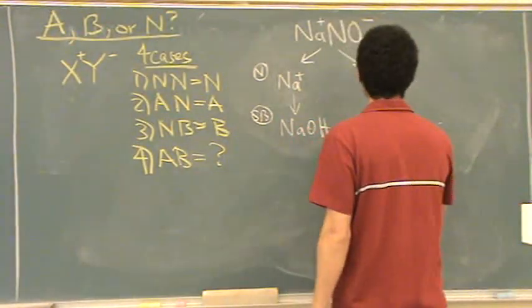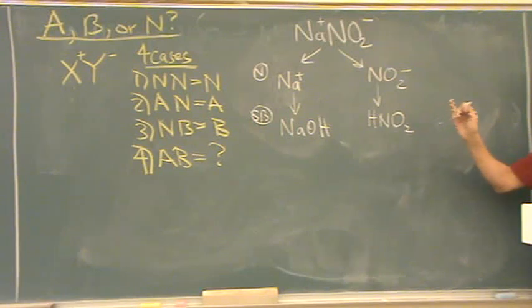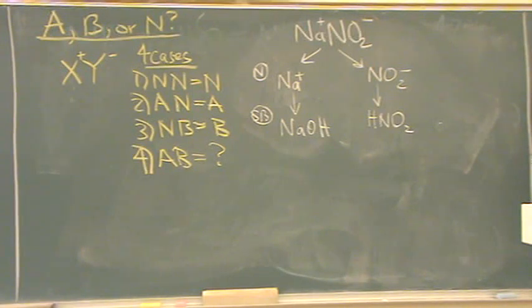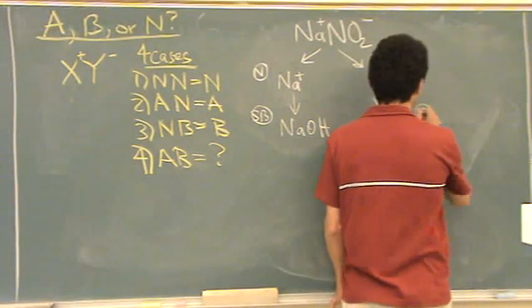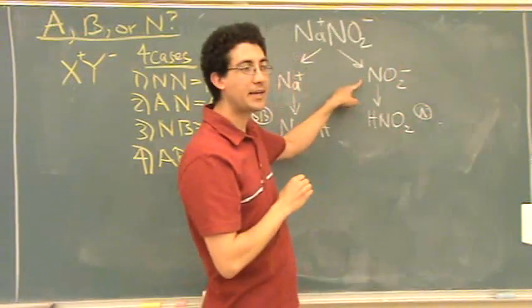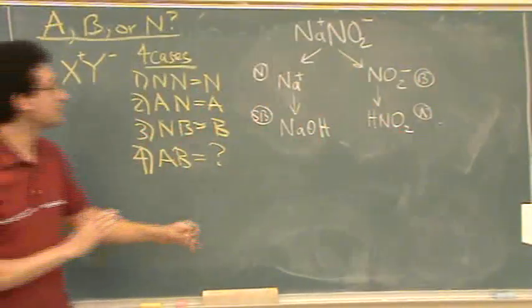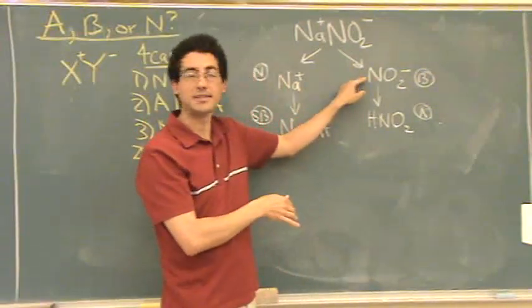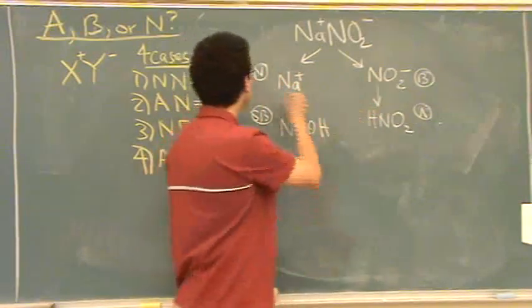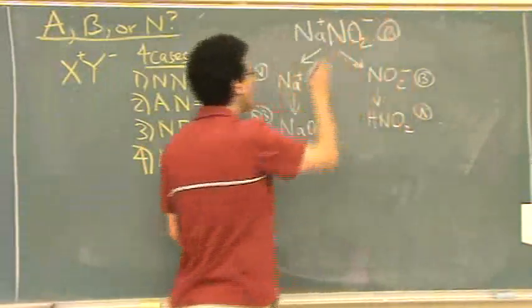For nitrite, we add an H to get HNO₂. Now we need to determine what that is — it's an acid, and it's weak because it's not on the strong acid table. Label it a weak acid. The conjugate of a weak acid is a weak base — if it's not on the table, the conjugate is not neutral; it's the opposite. So we have neutral plus base: that's case three. This compound NaNO₂ is actually basic.